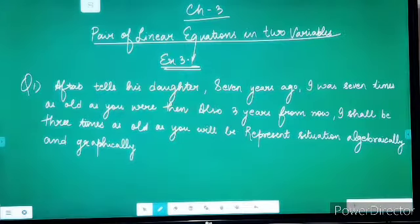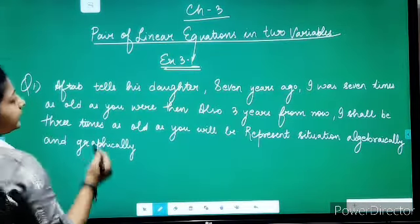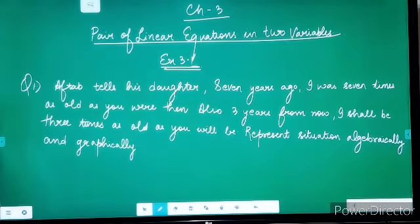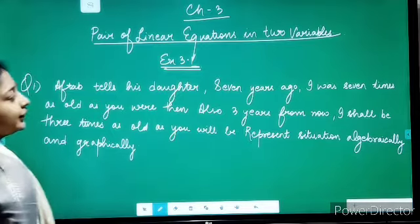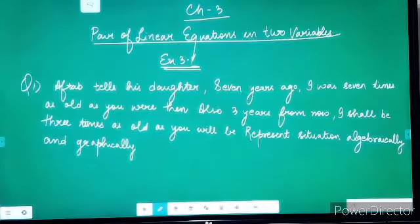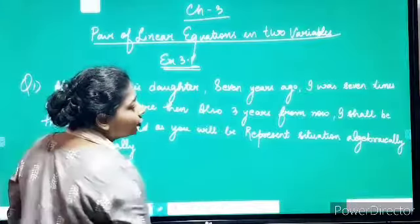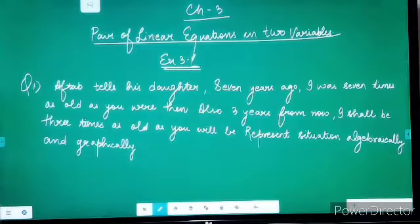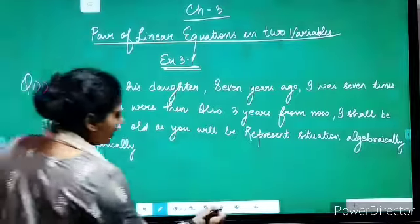Exercise 3.1, the first question is: Aftab tells his daughter, '7 years ago I was 7 times as old as you were then. Also 3 years from now, I shall be 3 times as old as you will be.' We have to represent this situation algebraically as well as graphically.